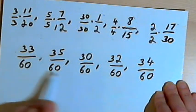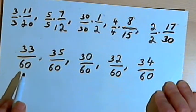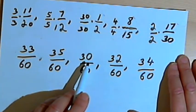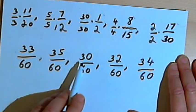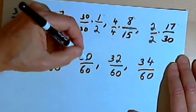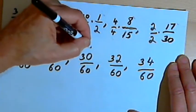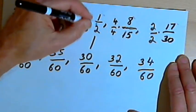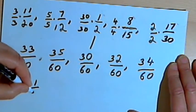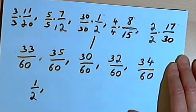So now all the denominators are the same. And all I've got to do is look at the numerators and start with the smallest one. The smallest one I have is 30. That's 30 over 60. And that was originally the fraction 1 over 2. So that means 1 over 2 is my smallest fraction.